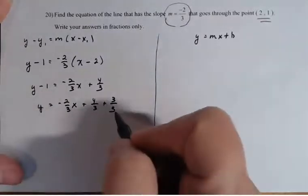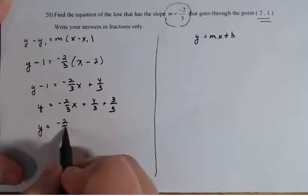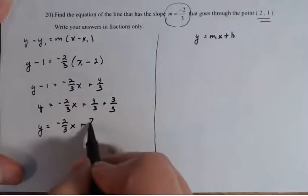So I'm adding one to both sides. So I'm adding three thirds to both sides. So Y equals minus two thirds X plus seven thirds.